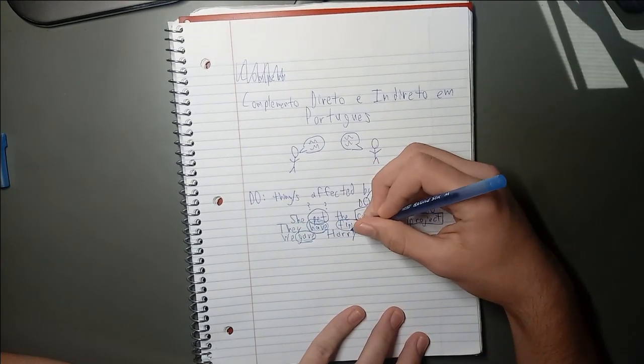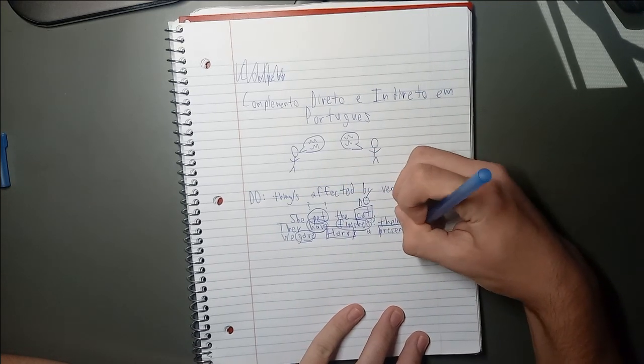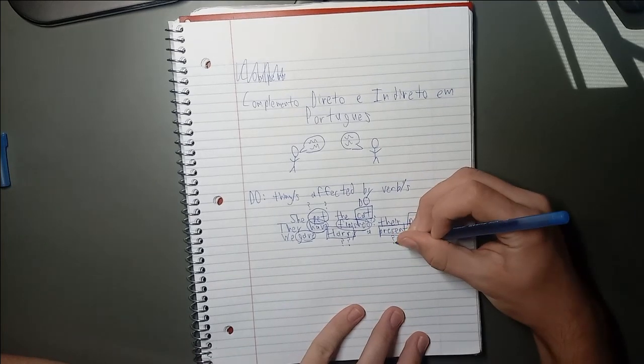What about the third sentence? The verb here is to give. But there's something different about this one. There are two things that are affected by the verb. Harry and the present.